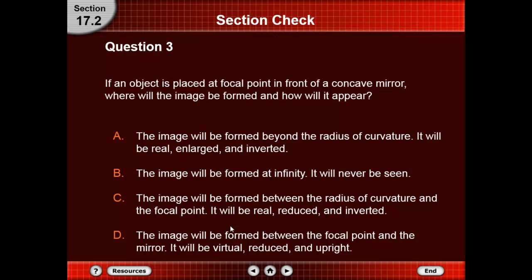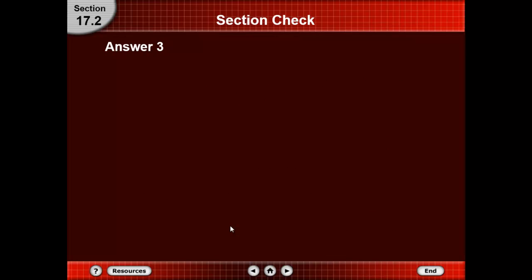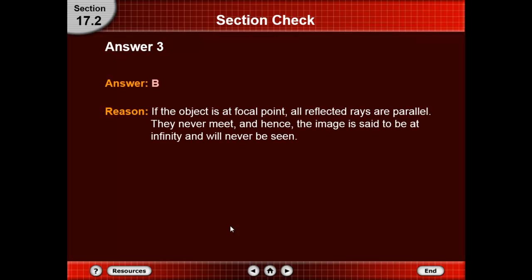Which one is correct? The answer is B. Because if the object is at the focal point, the reflected rays are parallel — they never meet — and hence the image is said to be at infinity and will never be seen.